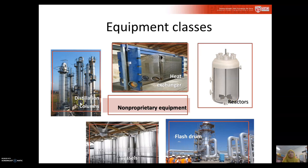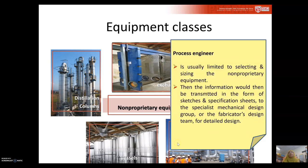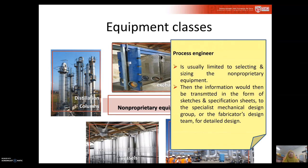For non-proprietary equipment, examples include heat exchangers, reactors, distillation columns, vessels, and flash drums. The task of the process engineer is usually limited to selecting and sizing the non-proprietary equipment. After they calculate the best sizing for the production need, the information would then be transmitted in the form of sketches, drawings, or specification sheets to a specialist mechanical design group or to the fabricator's design team for detailed design.